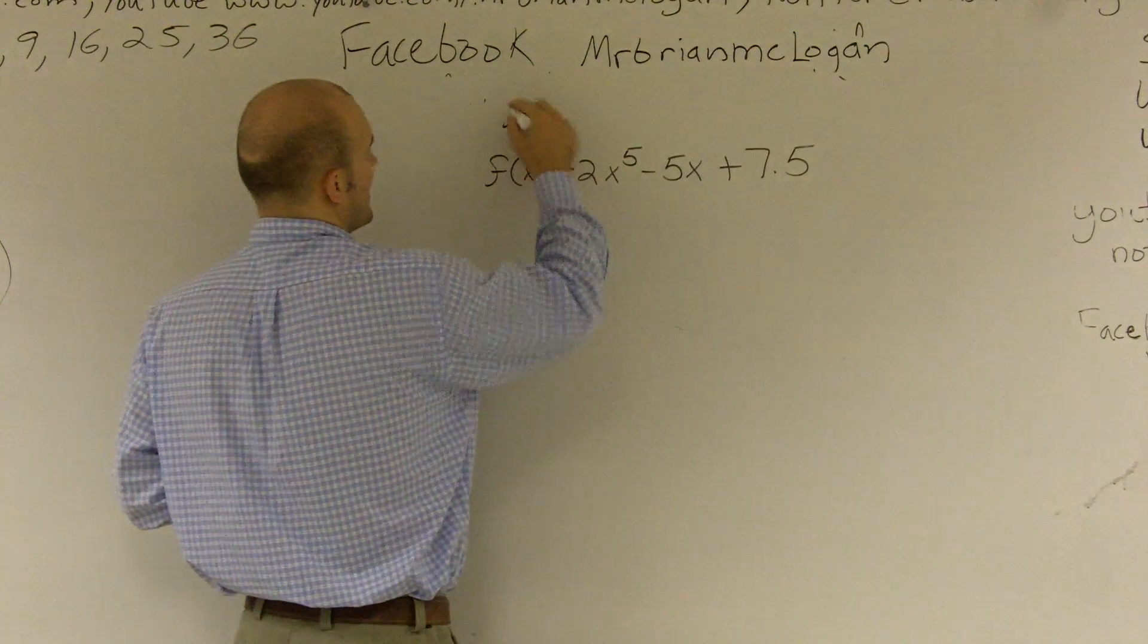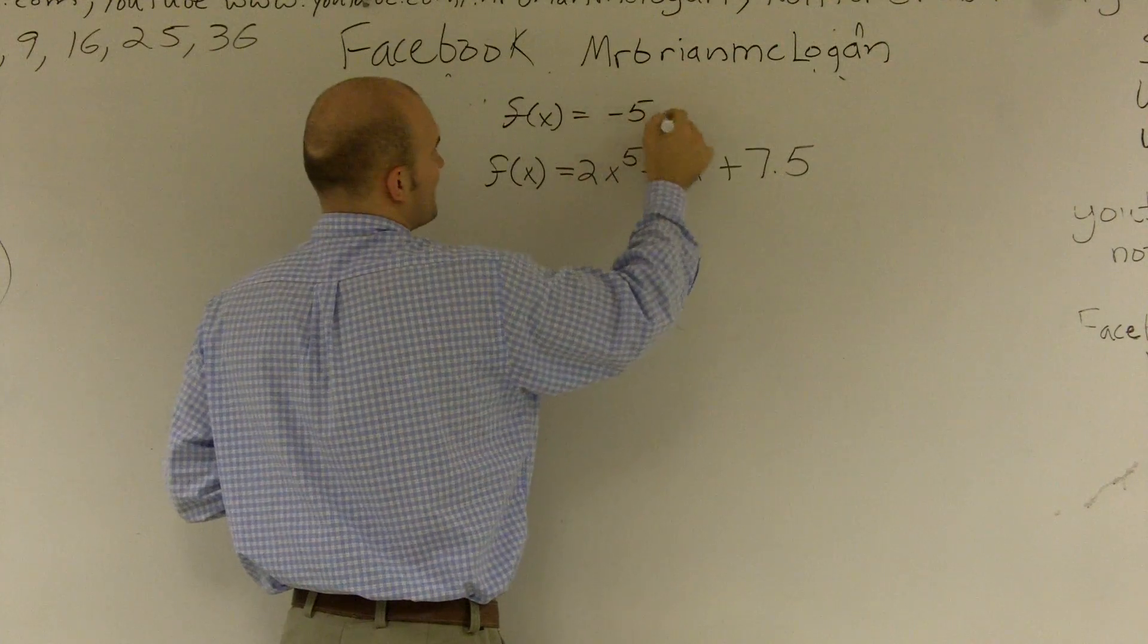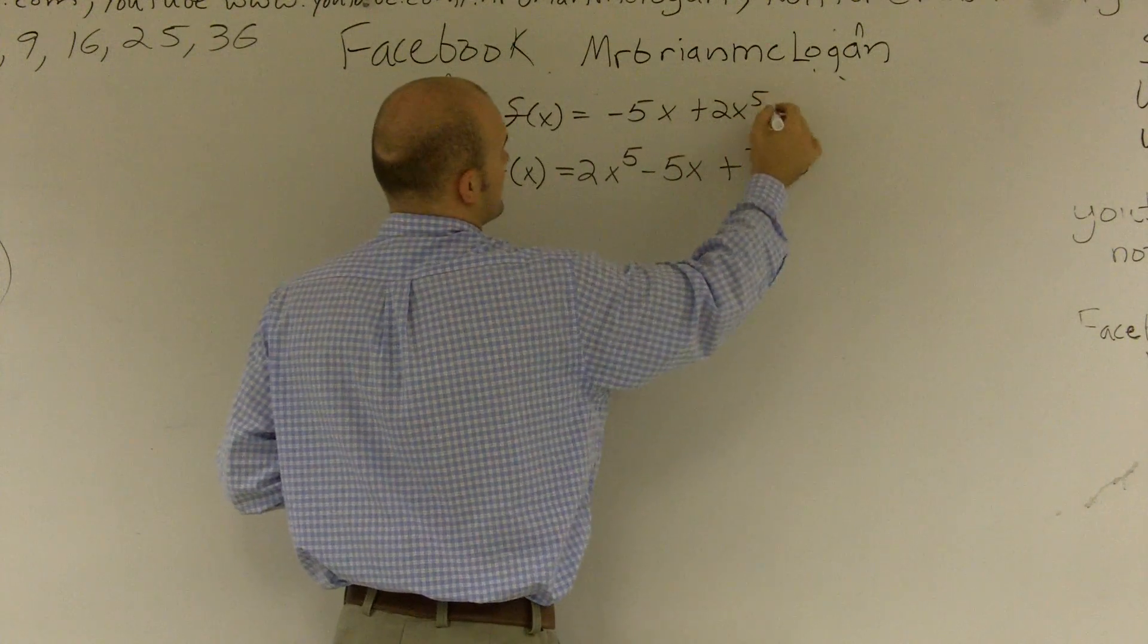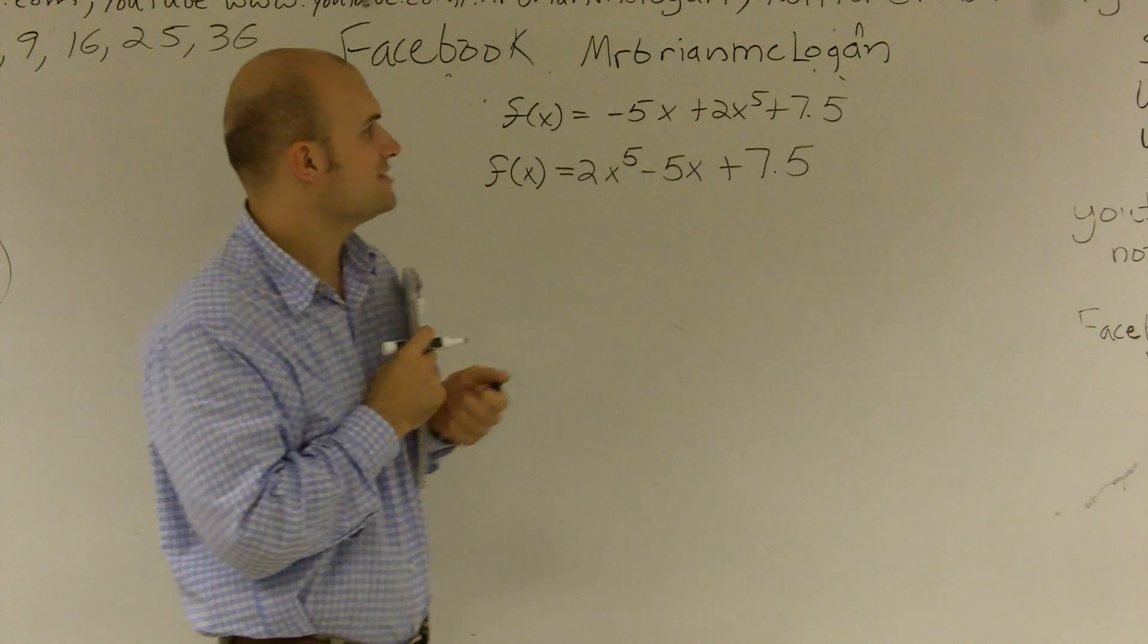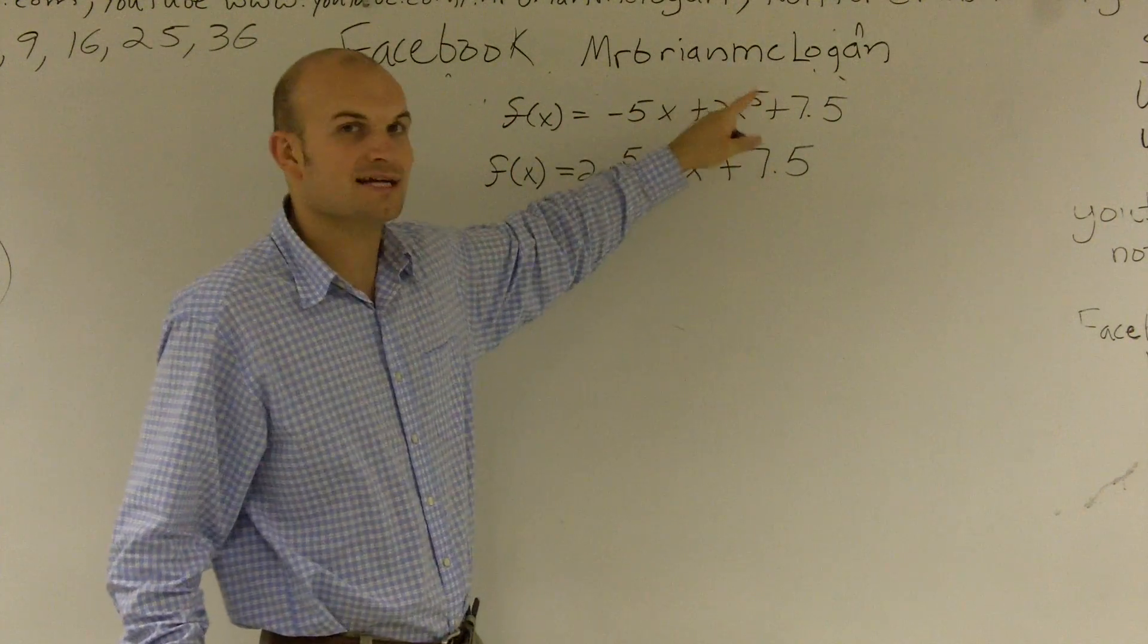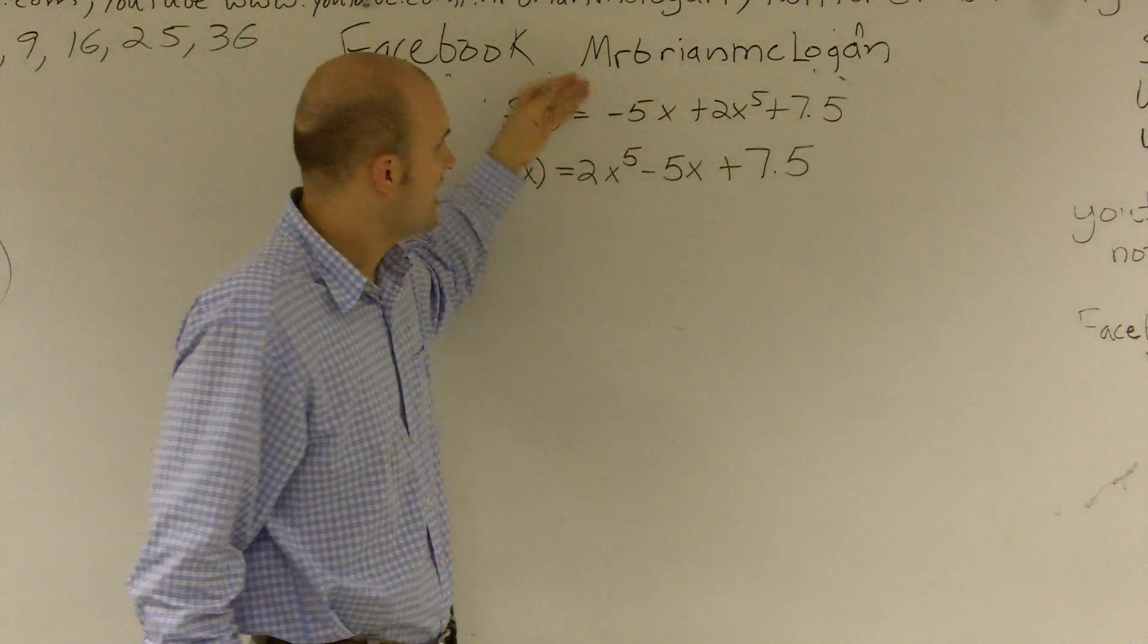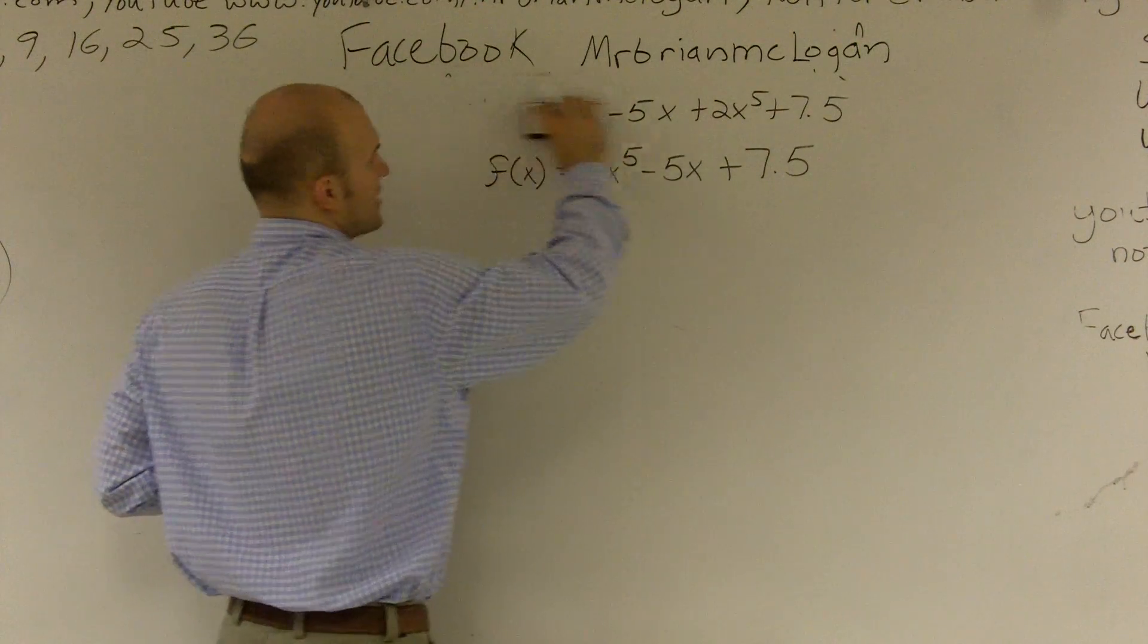Here's an example. If I had, if originally the book maybe gave me the problem as -5x + 2x^5 + 7.5, that's not written in descending order. You need to make sure that your highest exponent is in front. So it's what we call your degree. And then it goes in descending order from there. So the problem already starts like that, and so we're good.